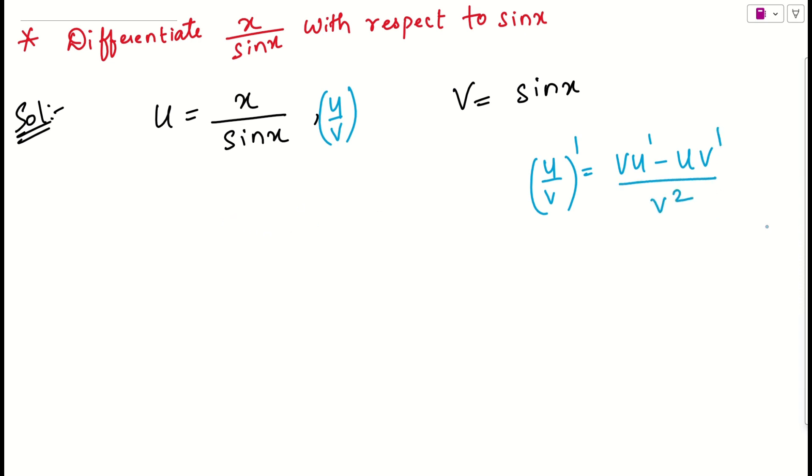So the same formula I will be applying here. If I differentiate this function with respect to x on both sides, what I will be getting? du by dx is u by v. So denominator v into x derivative - numerator derivative u dash. x derivative will be 1 minus numerator x as it is, denominator sin x derivative will be cos x by v square.